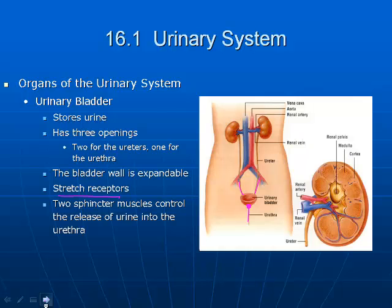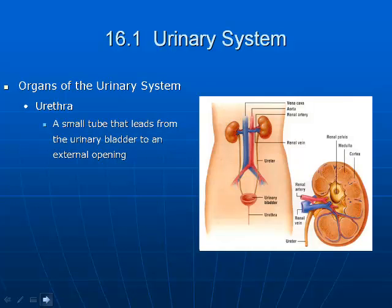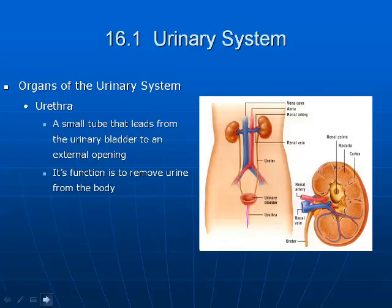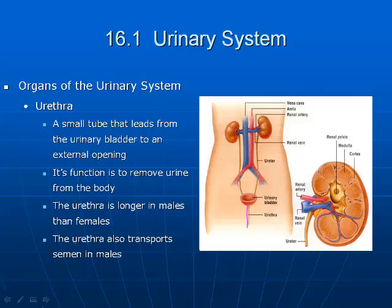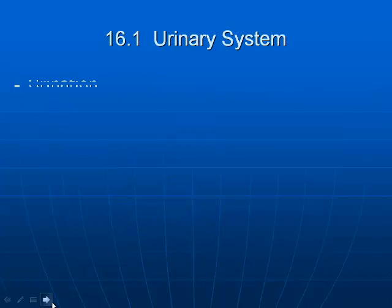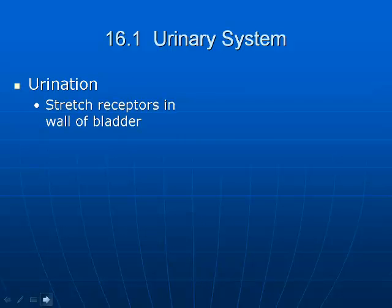The urethra is the tube through which urine flows from the bladder to the outside of the body. As a random fact, the urethra is longer in males than females because it travels through the penis. In males, it also serves a dual function, transporting both seminal fluid and urine.